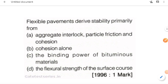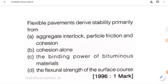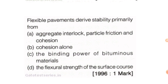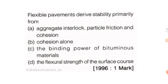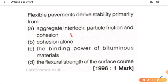Next question: flexible pavement derives stability primarily from? The options are: A — aggregate interlock, particle friction and cohesion; B — cohesion alone; C — binding power of bituminous material; D — the flexural strength of the surface course. We know that stability in flexible pavement comes from aggregate interlock, friction, and cohesion — three factors. So A is the answer.